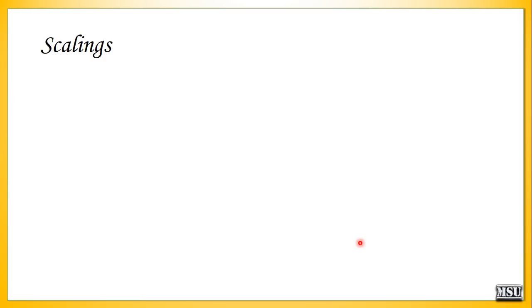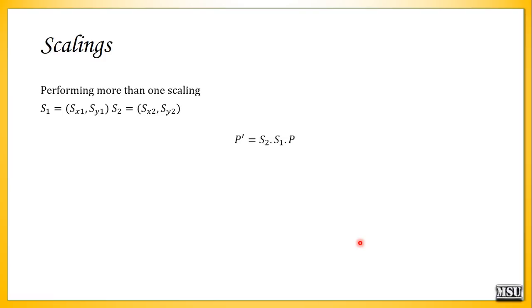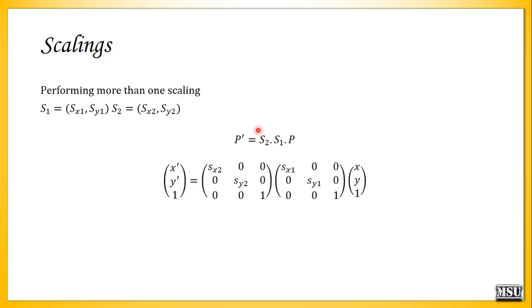For composite scaling, we need two scale factors S1 and S2. A point p is first scaled with S1 then with S2. Directly multiplying: x' = x·Sx1·Sx2, y' = y·Sy1·Sy2, and the homogeneous coordinate equals 1.